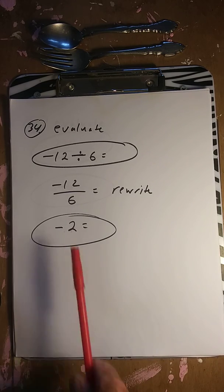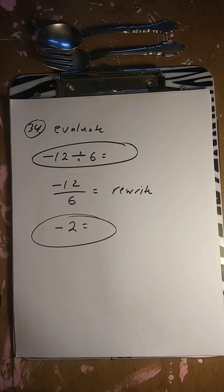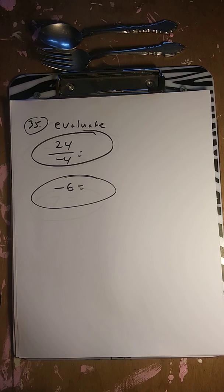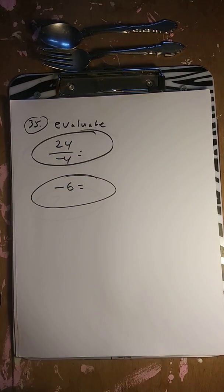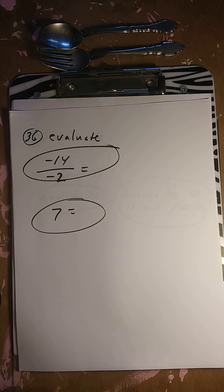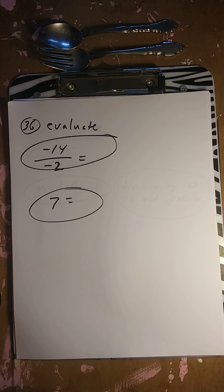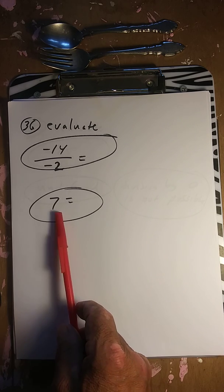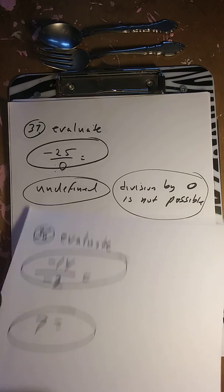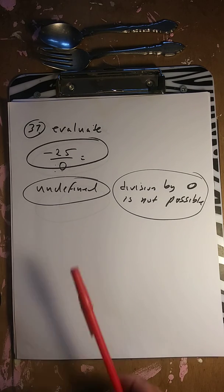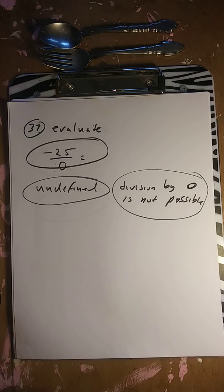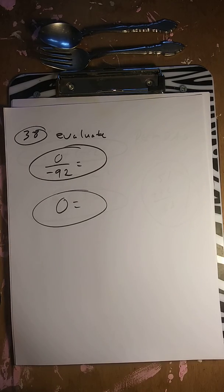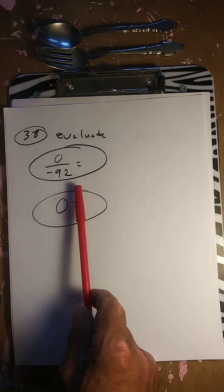Negative 12 divided by 6: negative by positive is negative 2. Positive 24 divided by negative 4: positive by negative is negative 6. Negative divided by negative is positive 7. Division by 0 is undefined — not possible. Zero divided by negative 25 is 0.